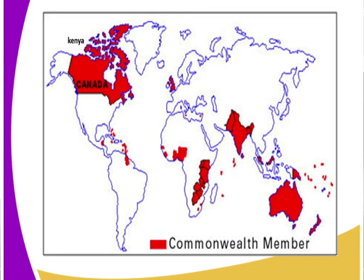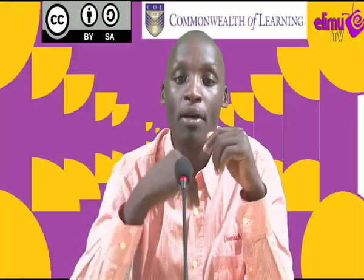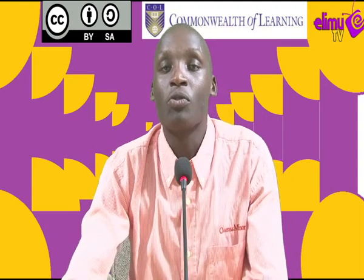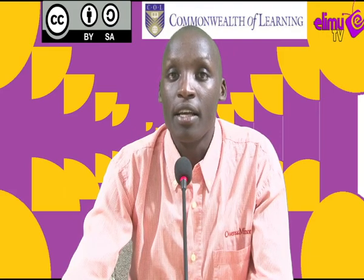Having said that, I have an assignment for you: get to state the other members of the Commonwealth that we have not mentioned. We have just mentioned a few using our map. For your reference, use the Evolving World History and Government book, seventh edition. For more videos and lessons, kindly join Limu TV on YouTube where you get to watch and learn. Thank you and see you in the next class.